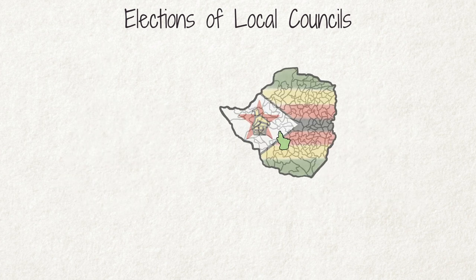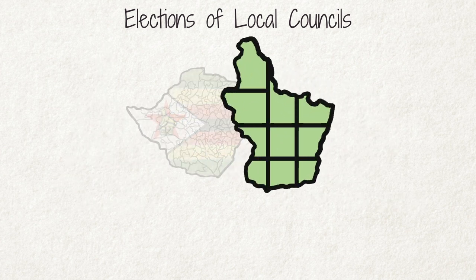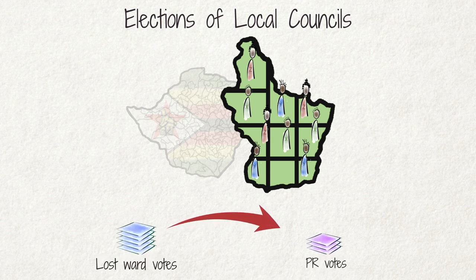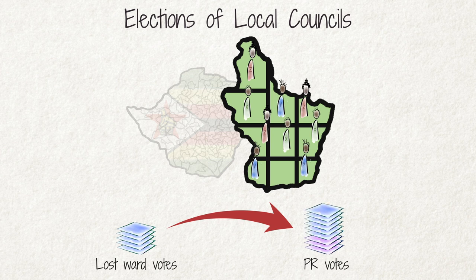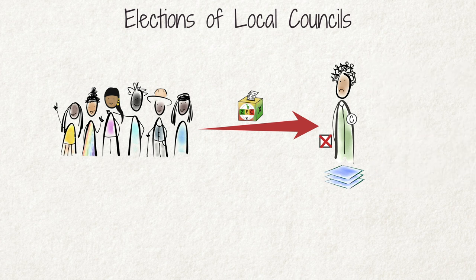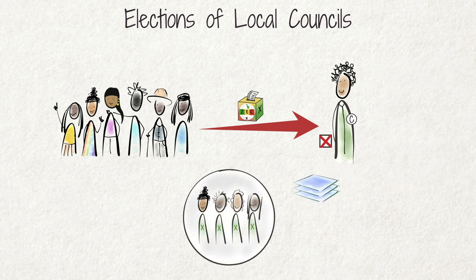If Parliament adopts legislation on PR women councillors, political parties should still try to field ward candidates in as many wards as possible — even in wards where they think they can never win — because even the votes for a losing ward candidate will still help that party obtain special women PR seats. Voters should go out and vote even if they think their preferred ward candidate can never win. Their vote still supports the party that has nominated their candidate.